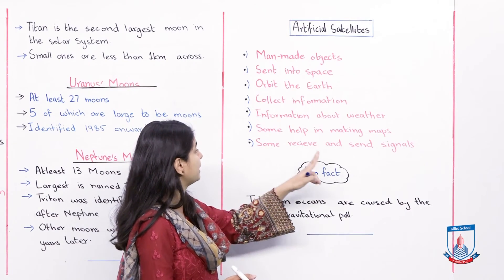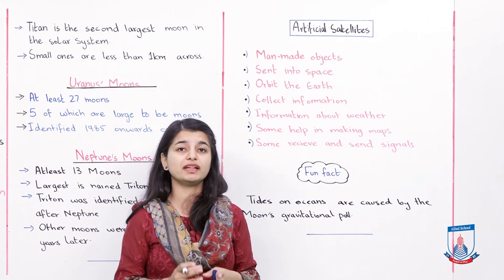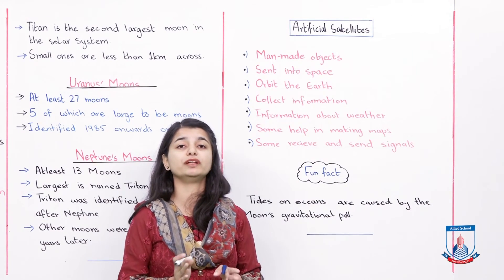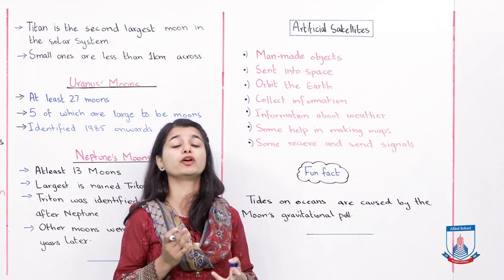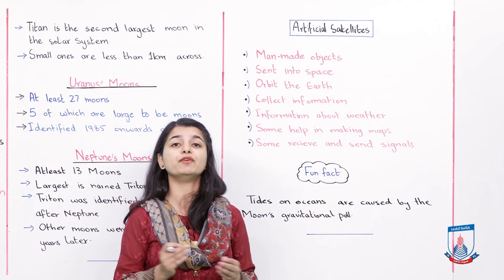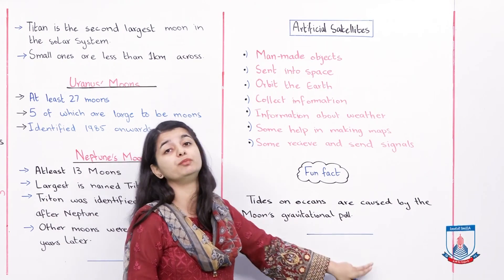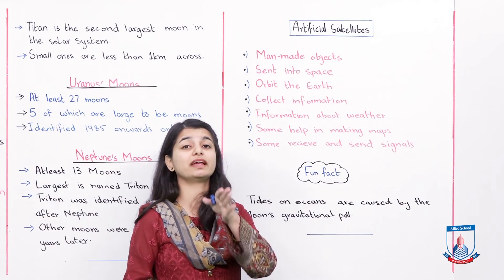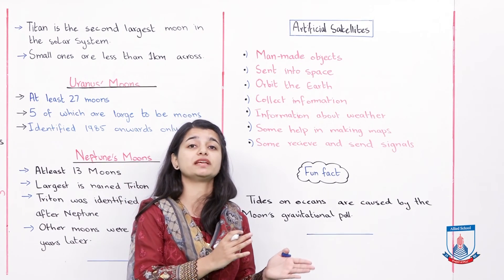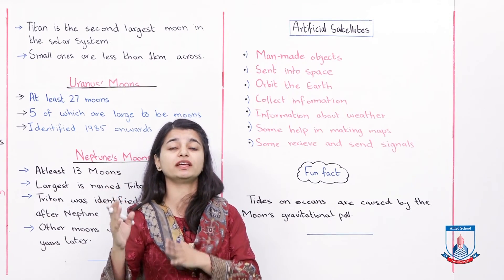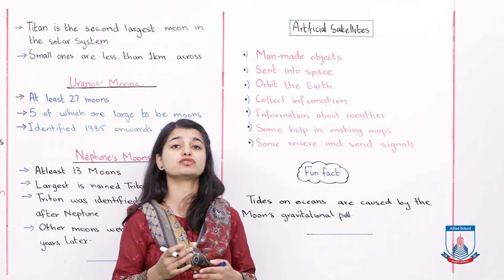Satellites help in making maps, some receive and send signals, and we have covered information about weather. We have pretty much talked about everything related to satellites, and we are now through with the topic of artificial satellites as well. The natural satellite is the moon and the artificial satellite is the one that we have created. What is common in both of them is that they orbit the Earth. Before we end the lesson, I also have a fun fact to share: the moon's gravitational pull is acting on different entities of our universe and that is why it is also causing tides in the ocean to rise.